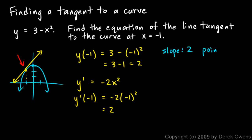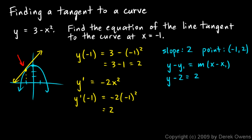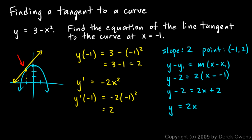We have a slope of 2 and the point (negative 1, 2). Using point-slope form: y minus y1 equals m times (x minus x1). Substituting: y minus 2 equals 2 times (x minus negative 1), which gives y minus 2 equals 2x plus 2. Bringing the 2 over, we get y equals 2x plus 4. That is the equation of the line tangent to the curve at that given point.